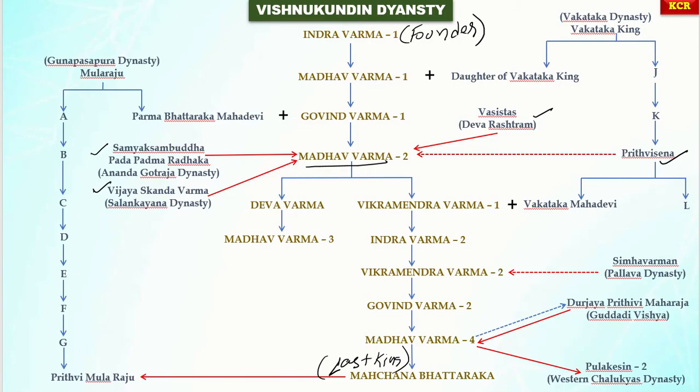In the introduction, please remember that the founder was Indra Verma One. The other name of Indra Verma was Maha Rajendra Verma. So who is the founder, who is the last king, and who is the most powerful king — all of that is now clear.